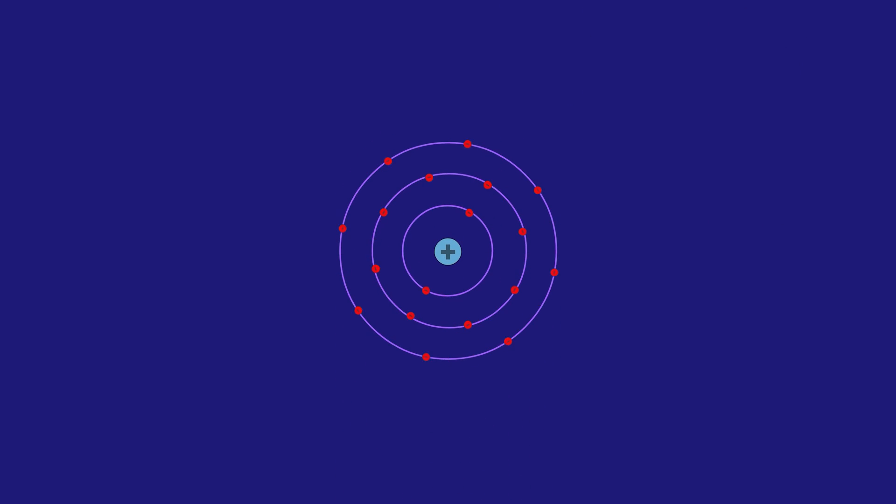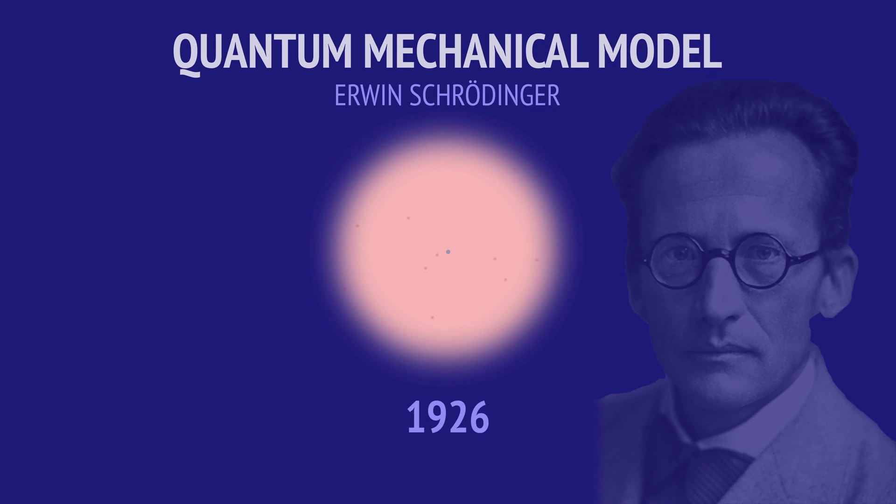As scientists explored further, they noticed that electrons appeared to behave as both particles and waves, and that the precise location of an electron cannot be known. We can only point to a defined space where there's a high probability of finding it, called the electron's orbital. This understanding and the development of the Schrödinger wave equation in 1926 gave rise to the quantum mechanical model and the concept of the electron cloud.